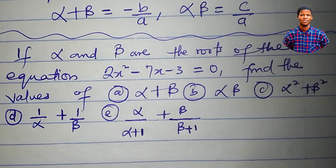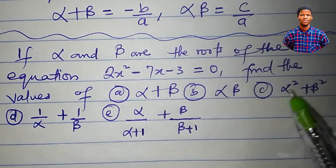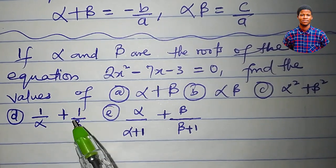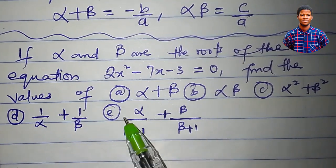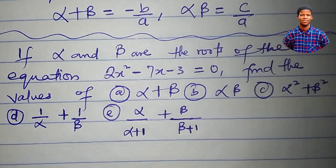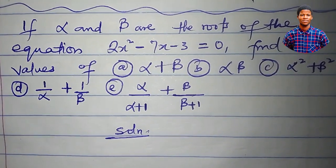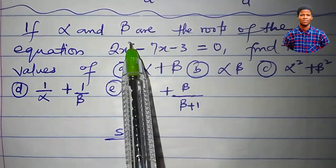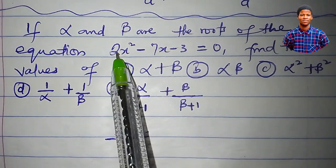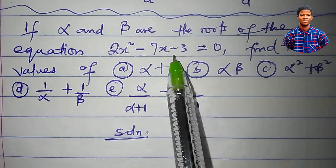we have to find the values of: alpha plus beta, alpha beta, alpha squared plus beta squared, 1 over alpha plus 1 over beta, and alpha over (alpha plus 1) plus beta over (beta plus 1). For this equation, a is equal to 2, b is equal to minus 7, and c is equal to minus 3.